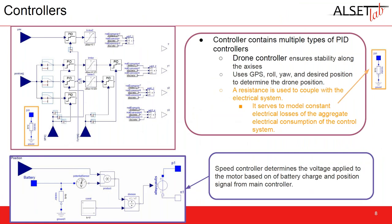Next we have our controllers. We have a main controller for the drone's operation consisting of multiple PID blocks. It ensures stability along all axes and uses the GPS roll, yaw, and desired position of the drone to determine what position signals are sent to each of the motors. There's also an orange box containing a resistance coupled with the electrical system — this couples to the battery and models the electrical losses of the aggregate electrical consumption of the control system, assumed constant and modeled as a constant resistance. We also have a speed controller that determines the voltage applied to each motor based on the battery's state of charge and the position signal from the main controller.